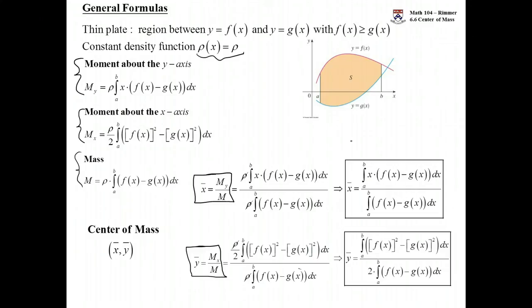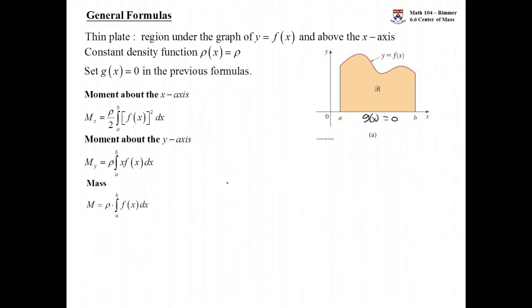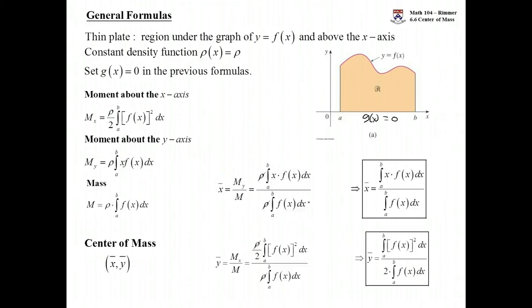These formulas simplify if the g of x is the x-axis. If you're just interested in underneath the graph of some f of x and above the x-axis, then we can just zero out these functions and we get simpler integrals. g of x is equal to zero, and so we have all the same formulas, but all the g of x parts are gone. It's just a special case of the previous.